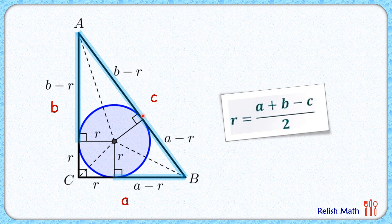If we'll compare the total length of AB that is c, and also (a - r) + (b - r), when we'll simplify this we'll get value of r as (a + b - c) / 2.